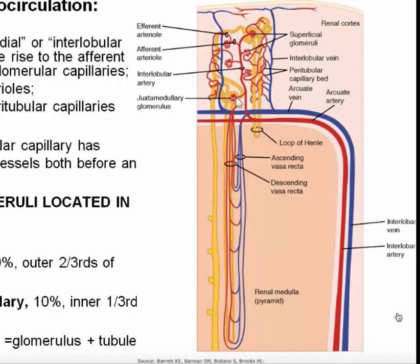About 10% of the glomeruli are deep in the cortex. All glomeruli are in the cortex, but these 10% are called the juxtamedullary glomeruli — juxtamedullary meaning next to the medulla. These glomeruli have an afferent arteriole, glomerular capillary, and then an efferent arteriole, which gives rise to a very different vasculature. These blood vessels plunge down into the medulla and form loop-like structures called the vasa recta. Vasa recta are very important in the kidney's ability to make concentrated and diluted urine, and we will talk about these medullary tubules and blood vessels in detail in the context of the kidney's ability to maintain water balance.